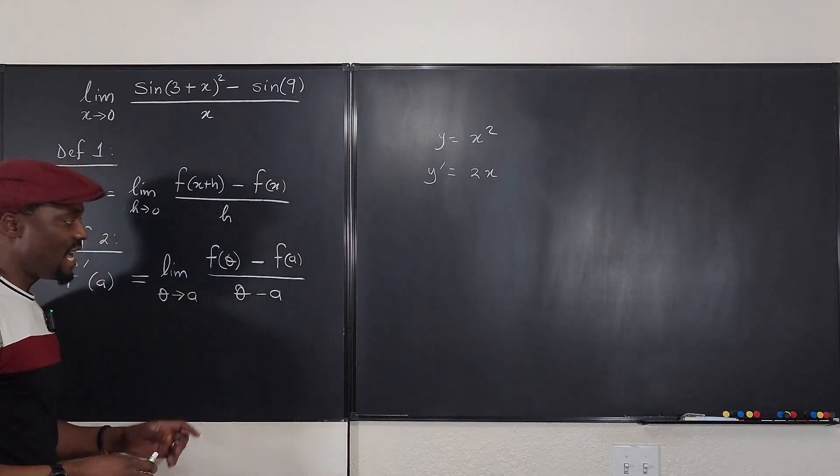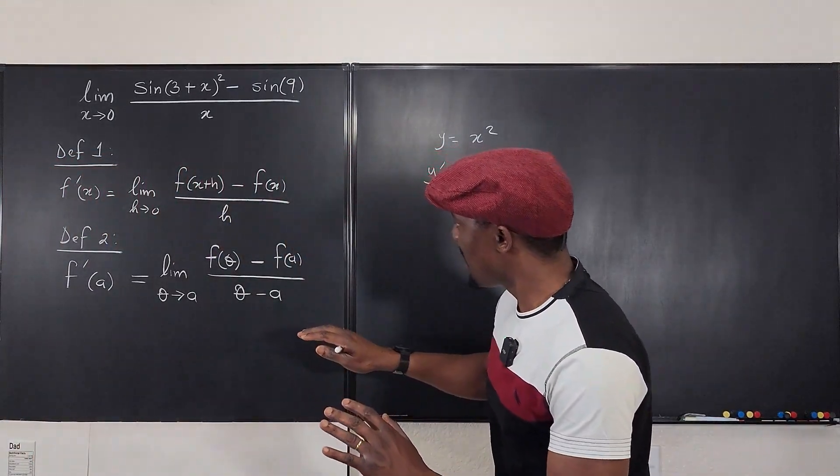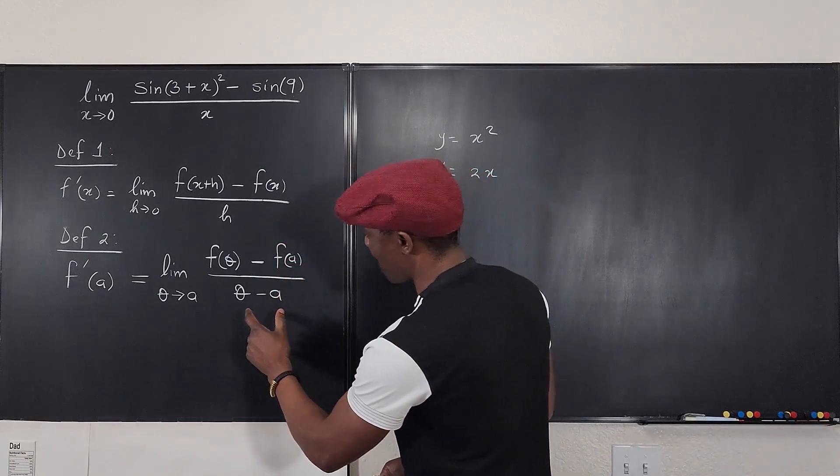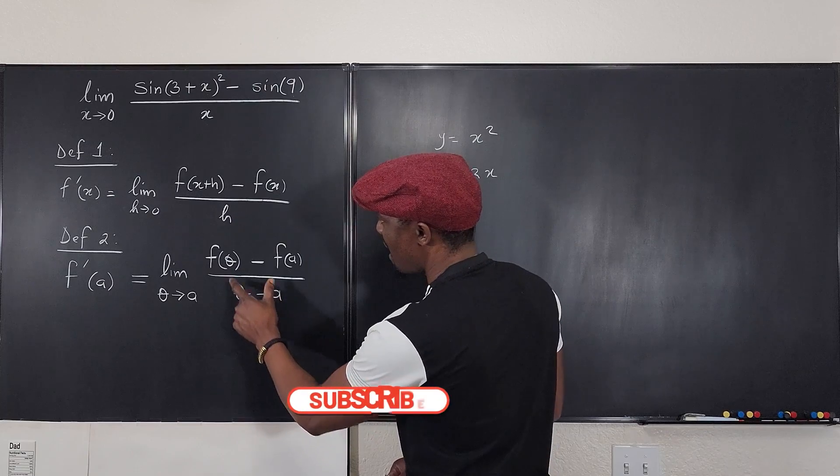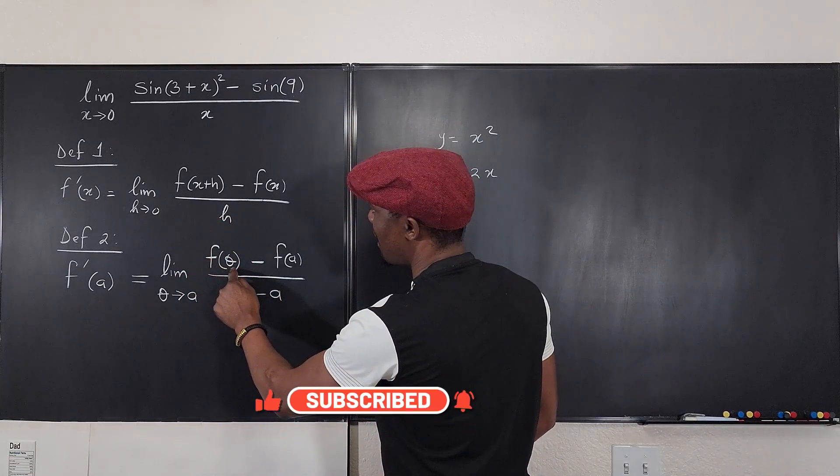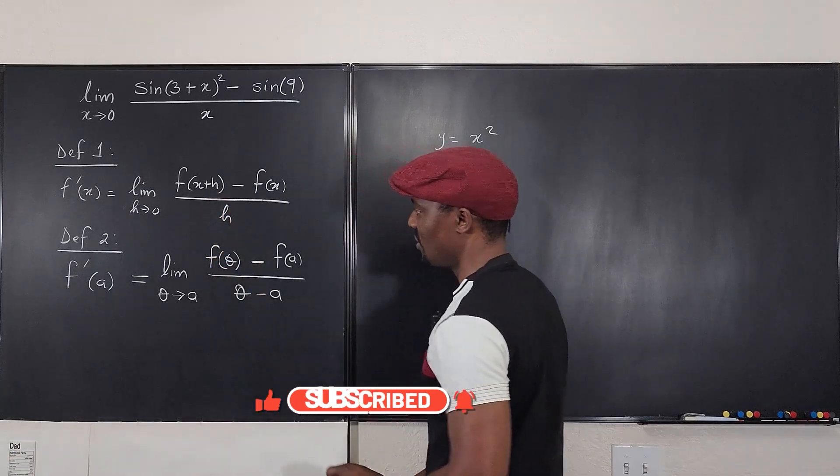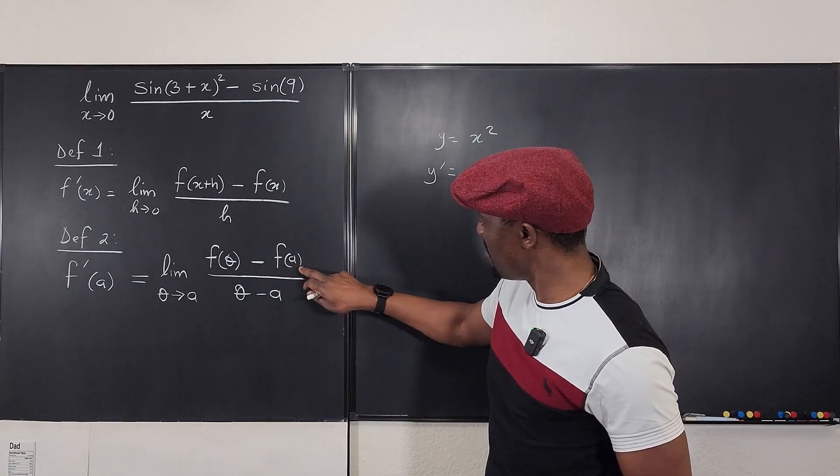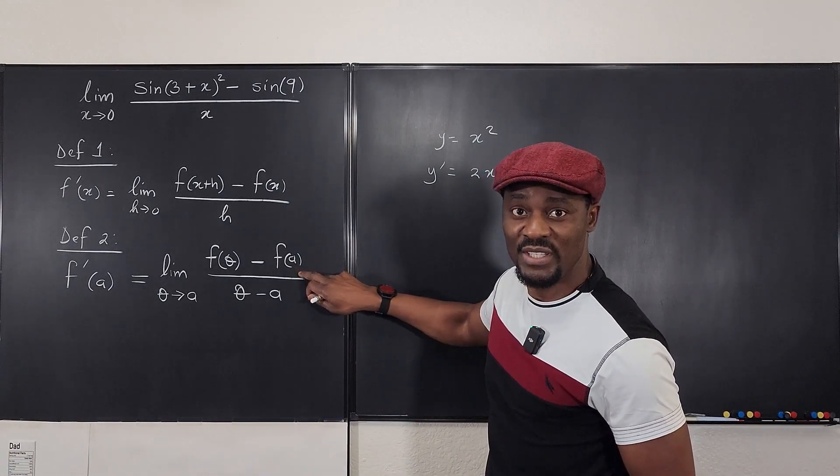of f of theta minus f of a over theta minus a. You can see in this case, you have a slightly different definition. It looks like theta minus a has replaced h and theta has replaced x plus h. We need to employ that because a point has been given. The point is a.